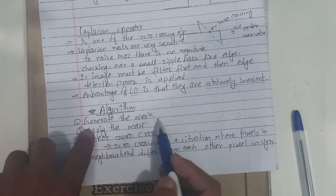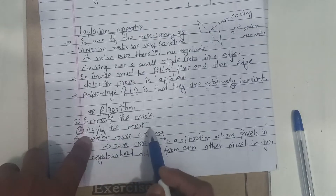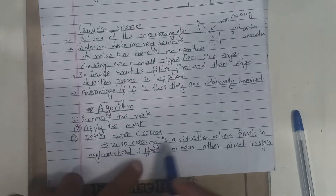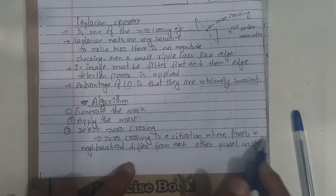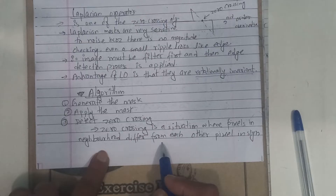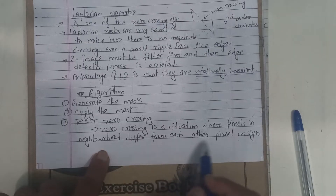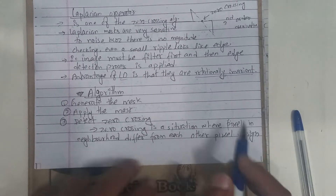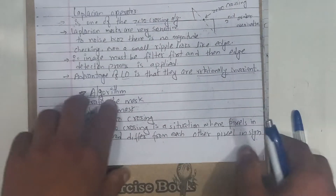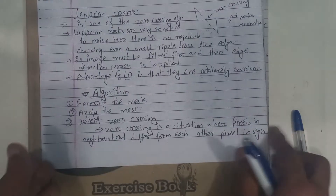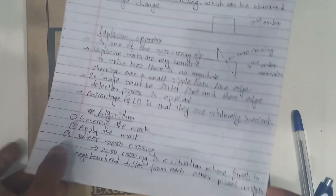The algorithm: join the mask, apply the mask, detect zero crossing. Zero crossing is a situation where pixels in the neighborhood differ from each other in sign — a sign change from pixel to pixel.